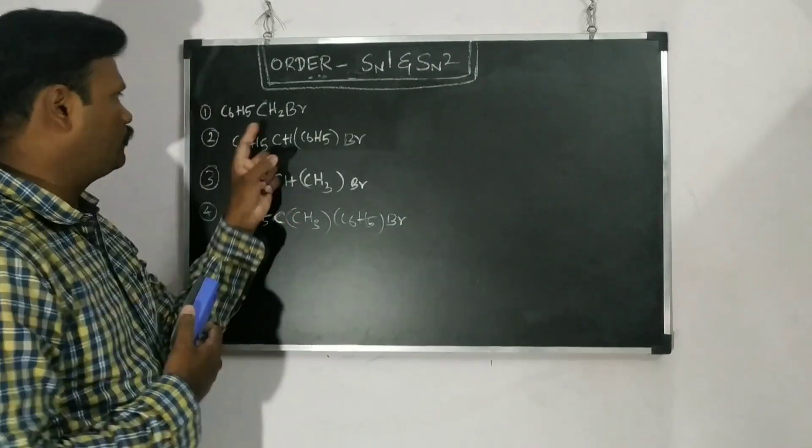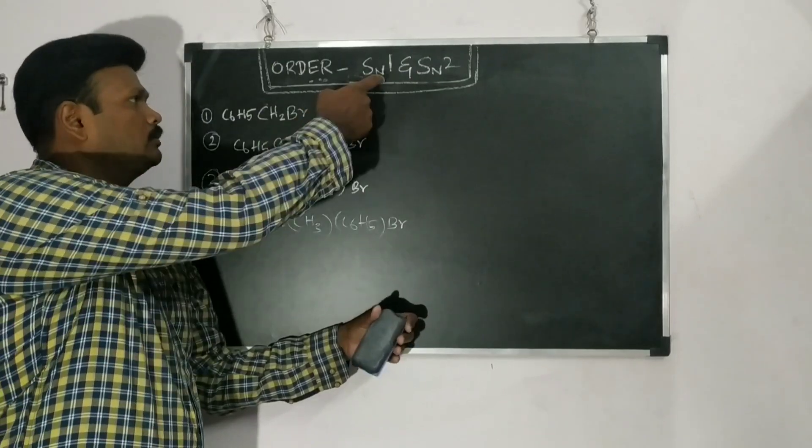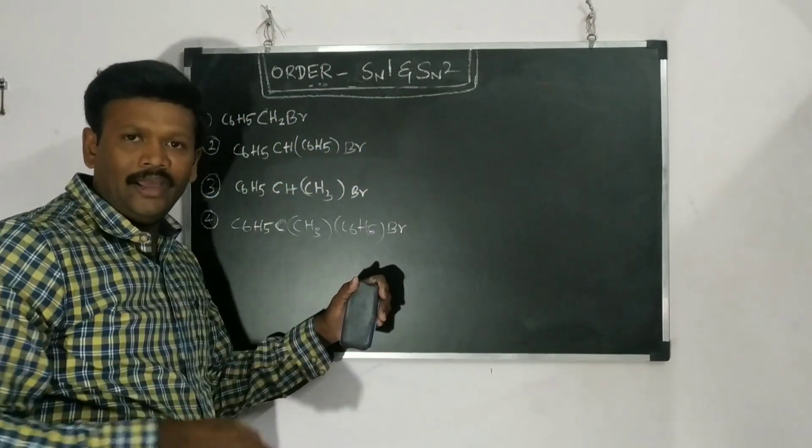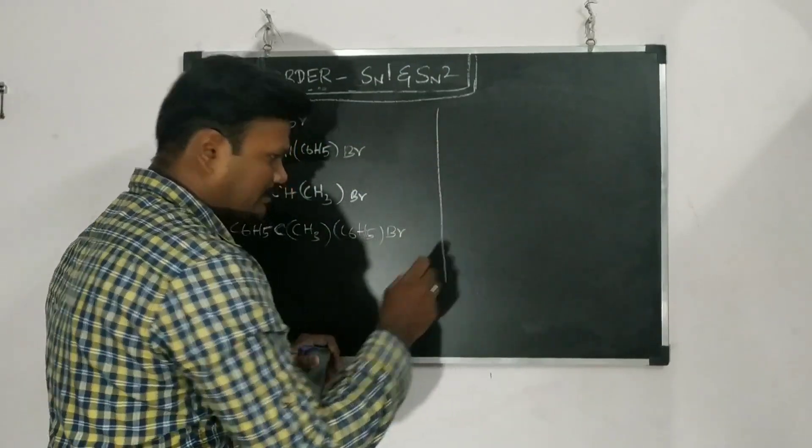So we have to solve this: which type of compound is highly reactive towards SN1 and which compound is highly reactive towards SN2. We have to find out these orders. By the way, we have to keep two things in mind.